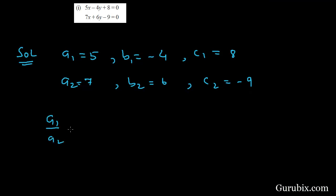If we find a1 over a2, this equals 5 over 7. And if we calculate b1 over b2, this equals minus 4 over 6, which equals minus 2 over 3.